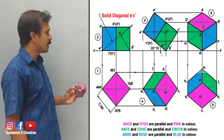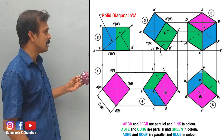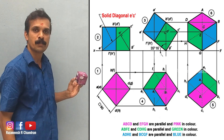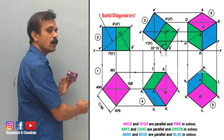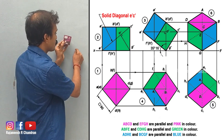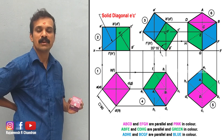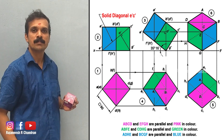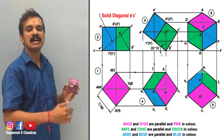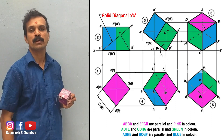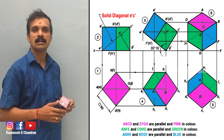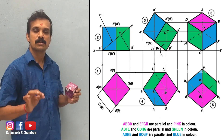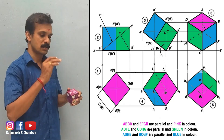When the solid diagonal becomes parallel to HP, the angle of the face inclined with the horizontal is 35 degrees 16 minutes. So in isometric projection, the object will be inclined at 35 degrees 16 minutes from the respective planes.